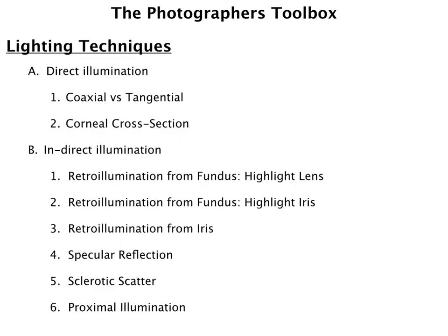Using those three basic types of lighting, we can come up with several lighting techniques to highlight specific pathologies. This is what I like to call the photographer's toolbox. There are two main categories we're going to be discussing: direct illumination and indirect illumination. First, we're going to talk about direct illumination. The reason we call it direct illumination is because the light — whether it's the slit beam or a diffuse light — is shown directly onto the pathology of interest.